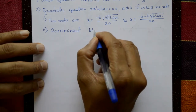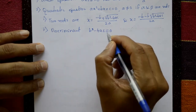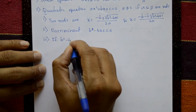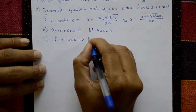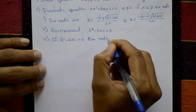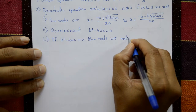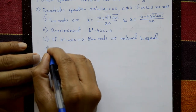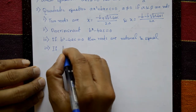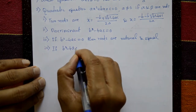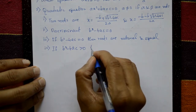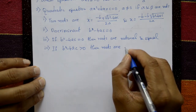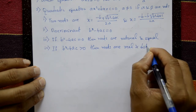The discriminant is b squared minus 4ac. Third point: if b squared minus 4ac equals 0, then the roots are rational and equal. Fourth point: if b squared minus 4ac is greater than 0, then the roots are real and distinct.